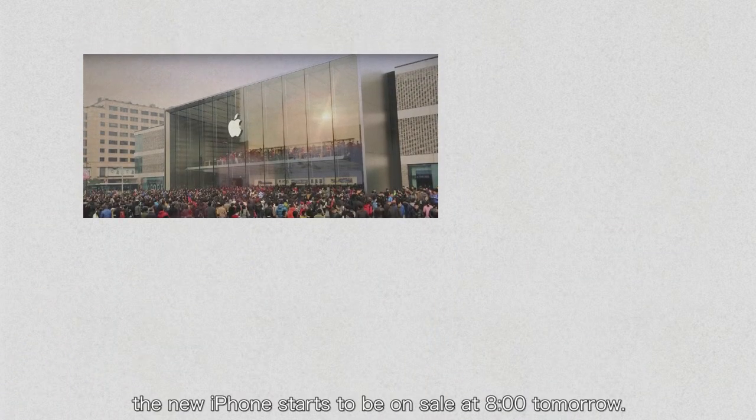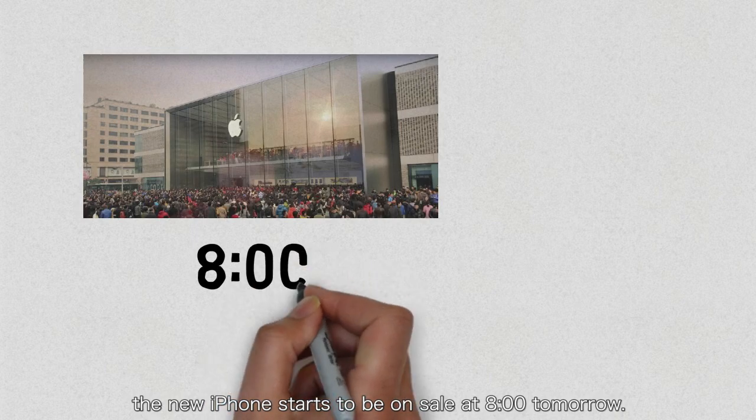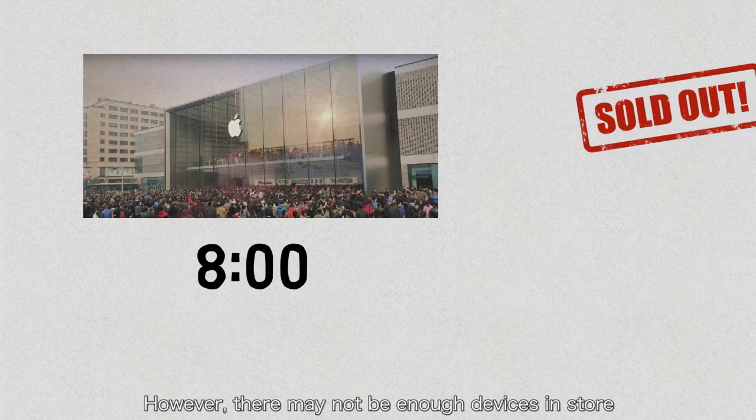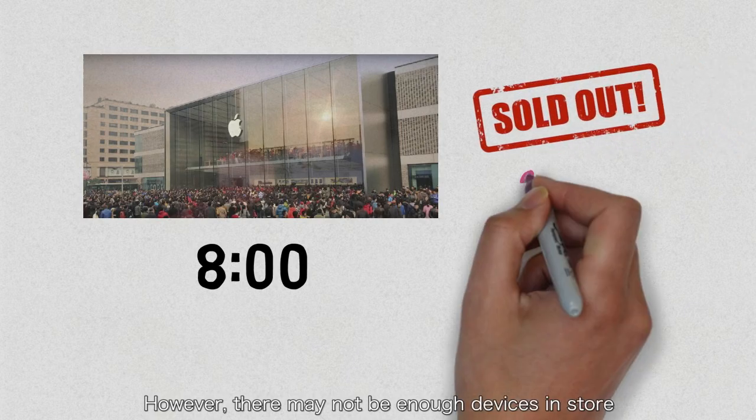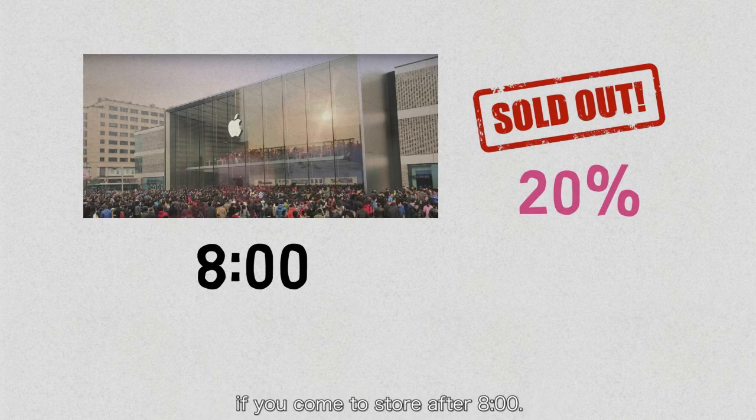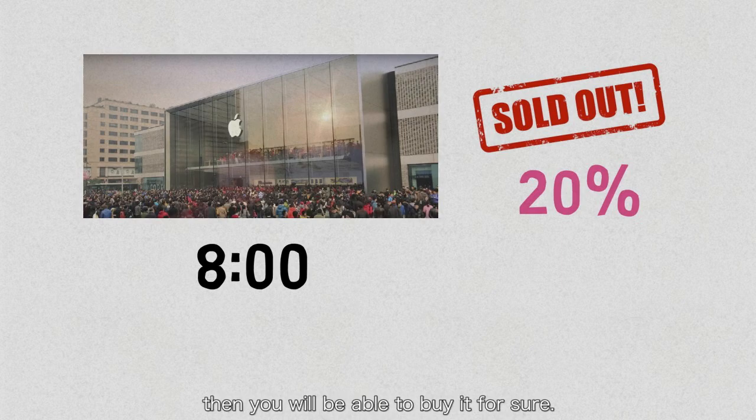For example, the new iPhone starts to be on sale at 8 o'clock tomorrow. Then you should be able to buy it after 8 o'clock. However, there might not be enough devices in store, so you have a 20% chance to get it today if you come to the store after 8 o'clock. But if you arrive one minute earlier, then you will be able to buy it for sure.